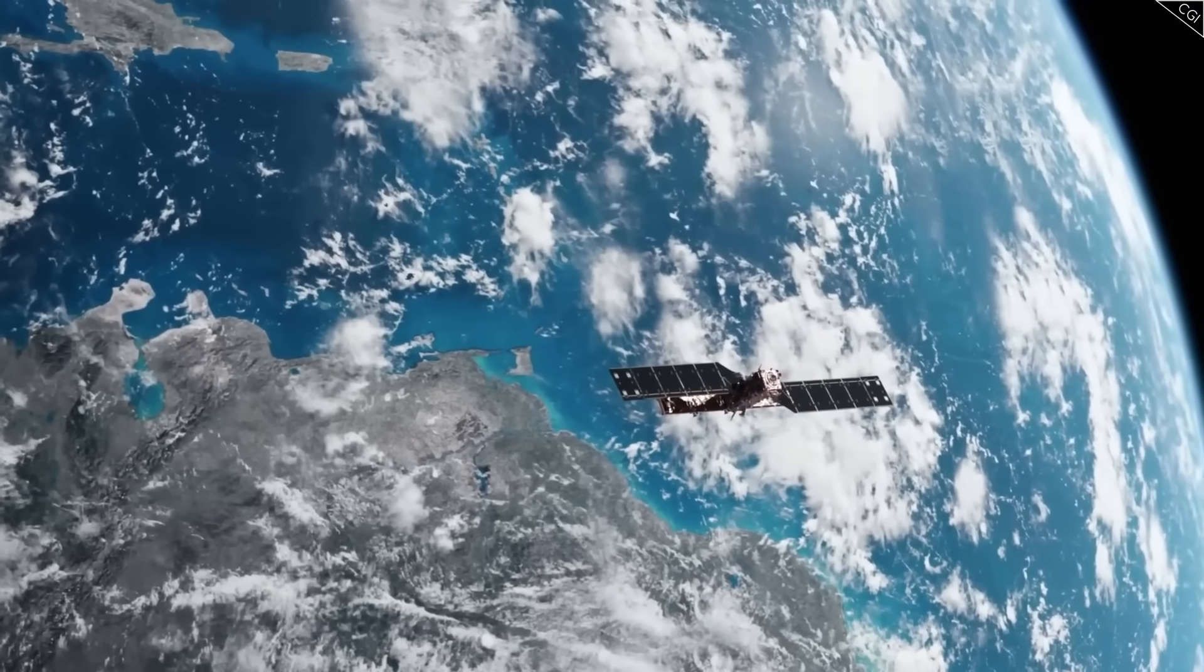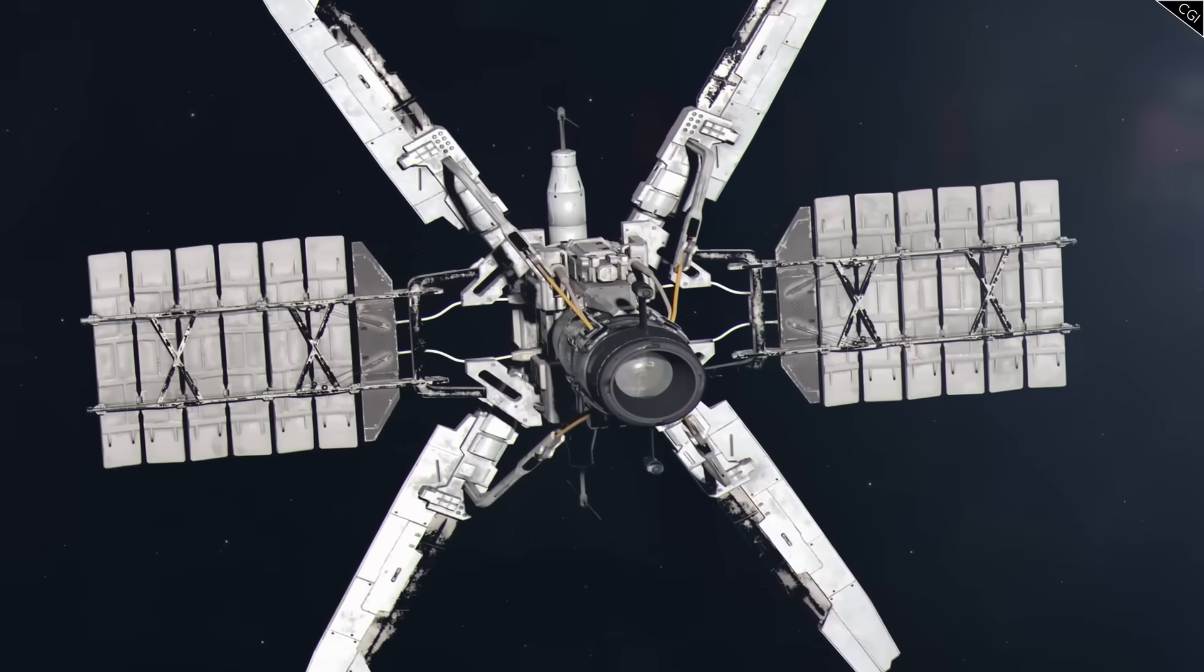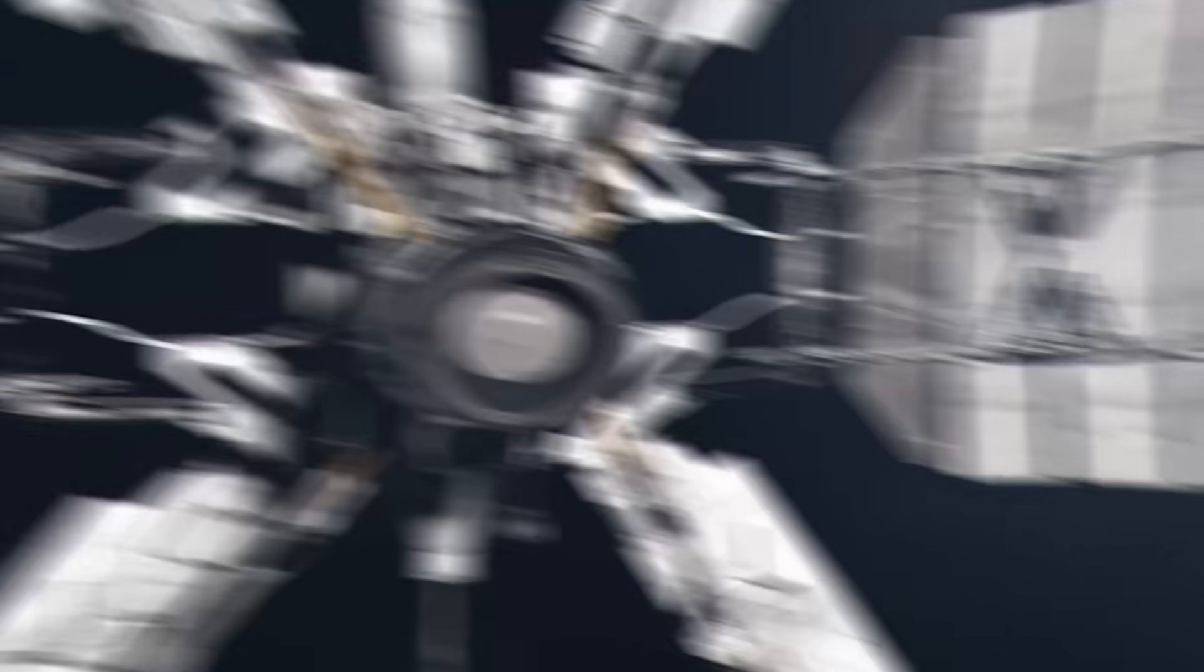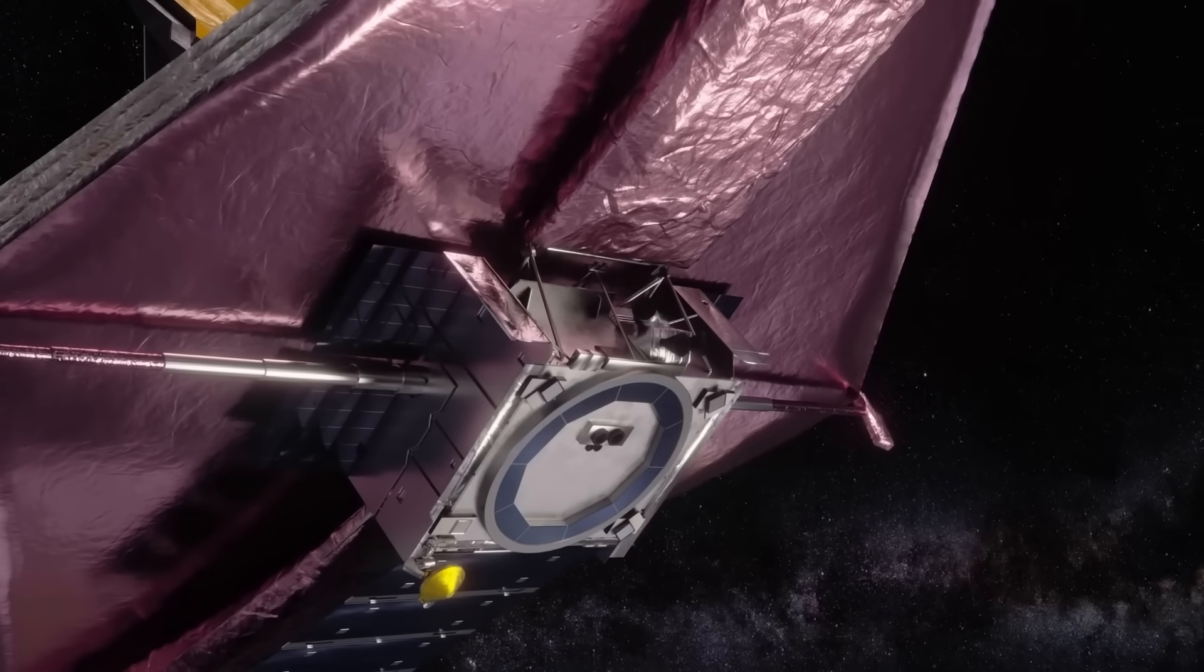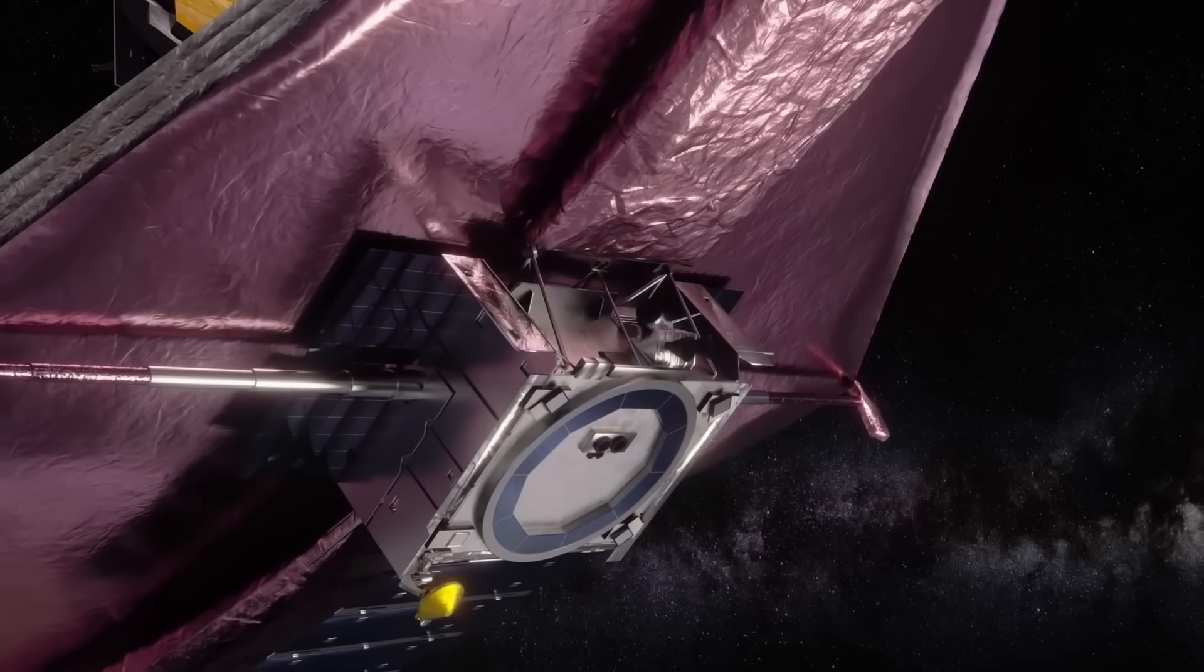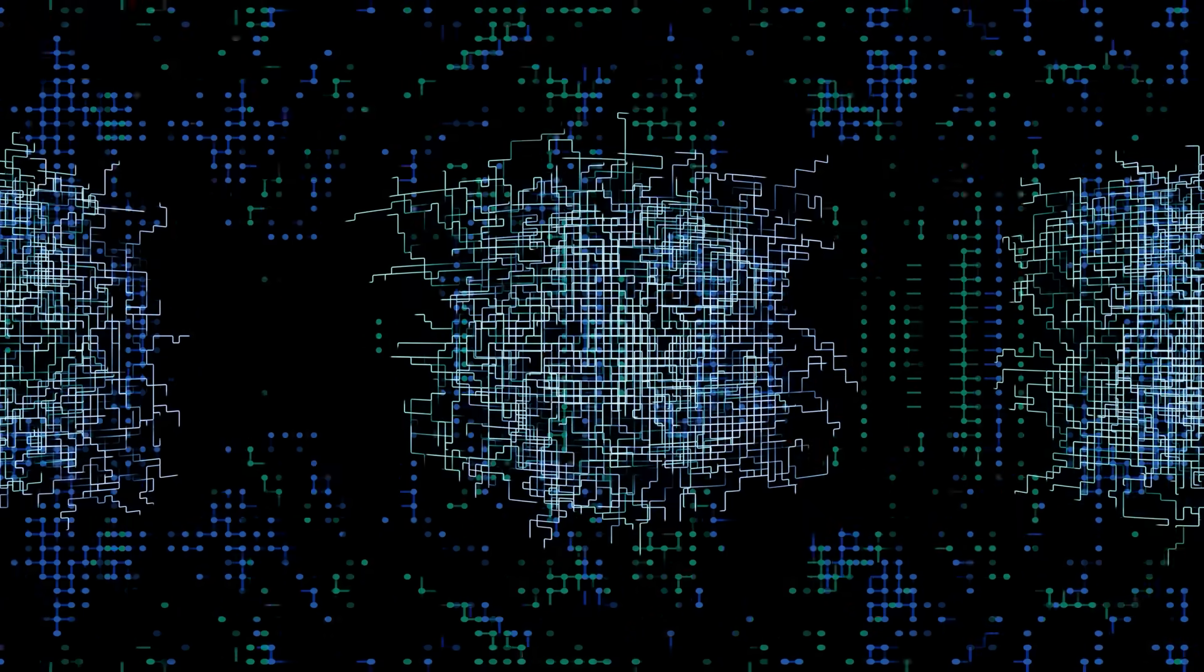The European Space Agency's Gaia Observatory, orbiting 1.5 million kilometers from Earth, picked up an identical reflection exactly 247 seconds after Webb's detection.